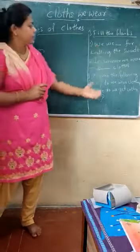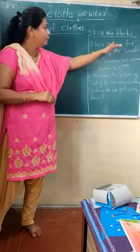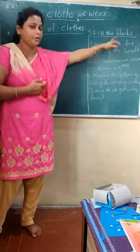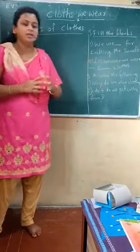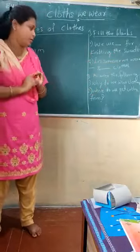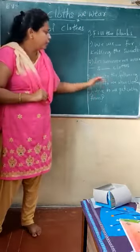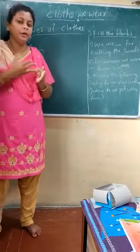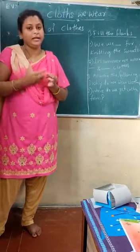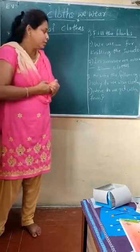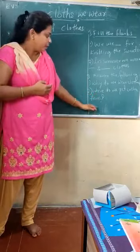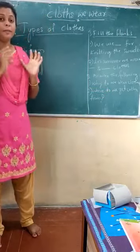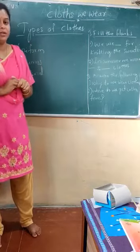Before ending, we are going to discuss some questions. First: we use dash for knitting sweaters — what do we use to knit a sweater? Yes, wool. Next: in summer we wear dash and dash cloths — cotton cloths and linen cloths. Next question: why do we wear cloths? To cover our body and to protect from heat, cold, dust, and rain. And: where do we get cotton from? From the cotton plant — the plant will be there and in the form of a flower we get the cotton.